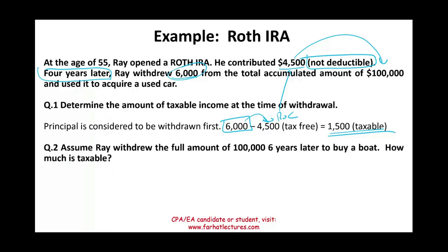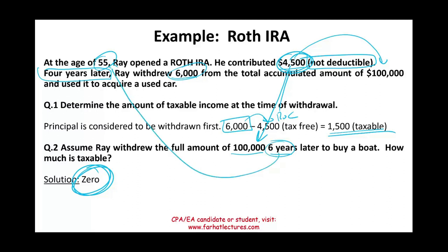Now assume Ray withdrew the full amount six years later. We'll also assume Ray met one of the qualifications and is now over 59 and a half. How much is taxable? None — none is taxable. Ray only invested $4,500, but this money grew to $100,000 — a lot of capital gains and earnings. Because Ray waited more than five years and met all the other requirements including the age requirement, none of that amount is taxable. Zero is taxable.